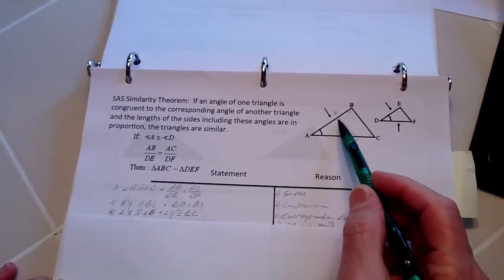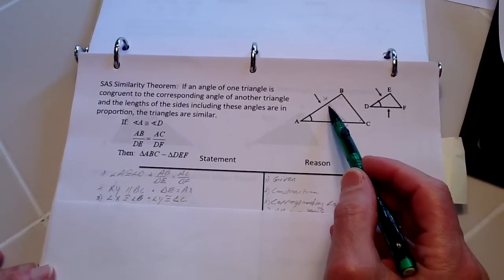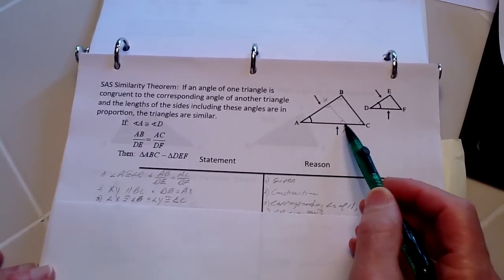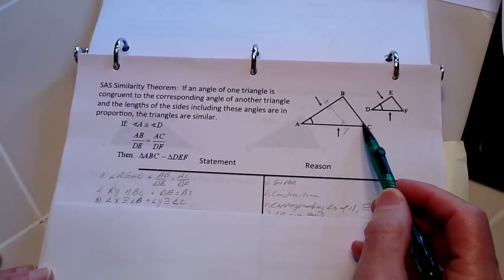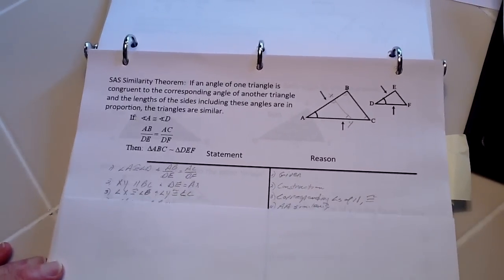From that we know that angle X and angle B are going to be congruent. Likewise, Y and C are congruent because both of those are corresponding angles of parallel lines, therefore they are congruent.